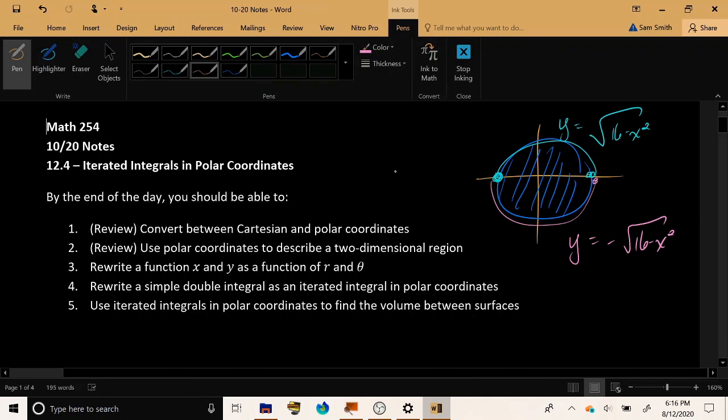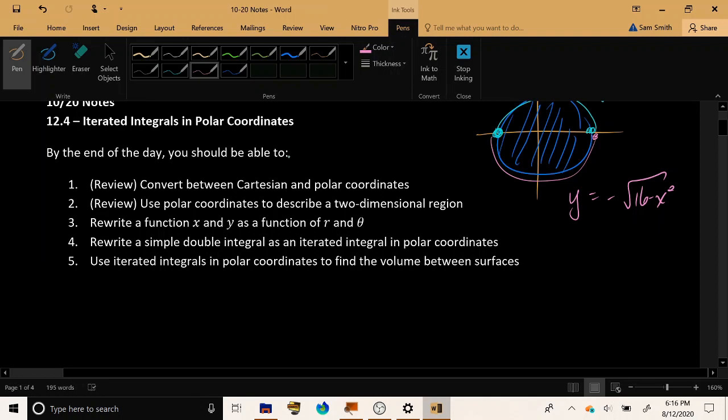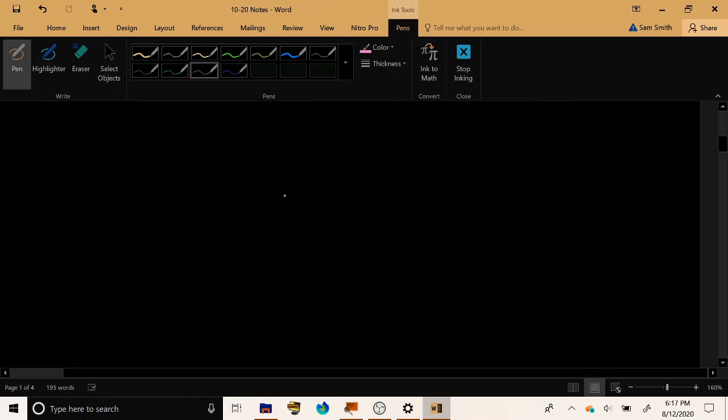Our goals for today are to briefly review the conversion between Cartesian and polar coordinates and how they can be used to describe regions, then review how to rewrite a function of x and y as a function of r and theta instead, and then rewrite some simple double integrals using polar coordinates instead of Cartesian coordinates and use them to find some volumes.